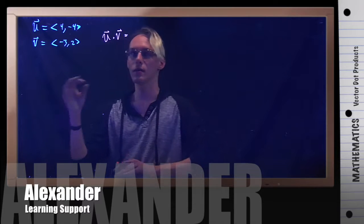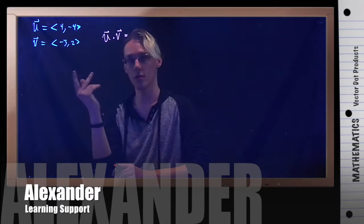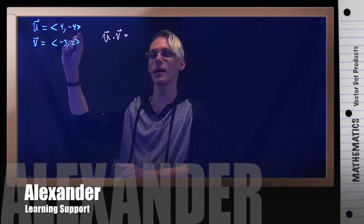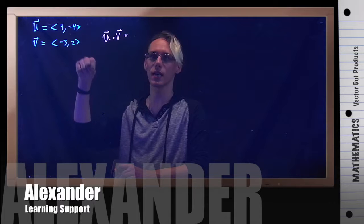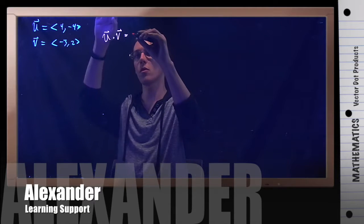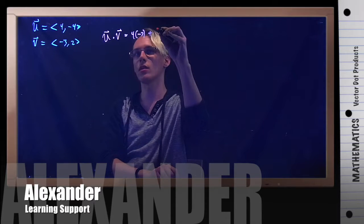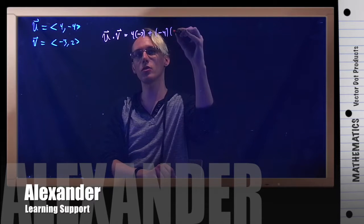The dot product is simply the sum of the products of the corresponding entries. In other words, multiply the x's together, add that to the y's multiplied together, and you would just keep going. So in this case, we have 4 times negative 3 plus negative 4 times 2.